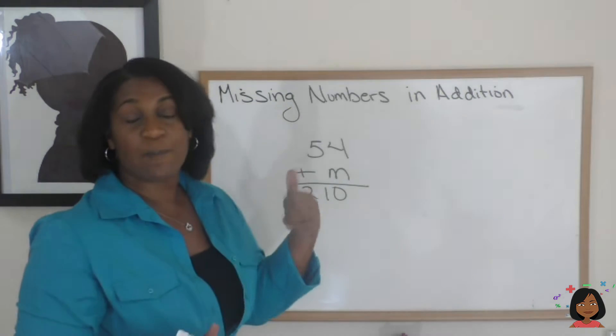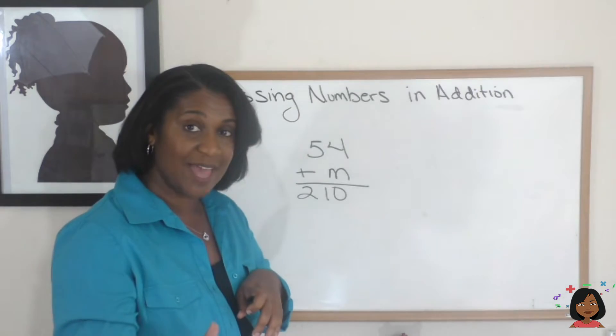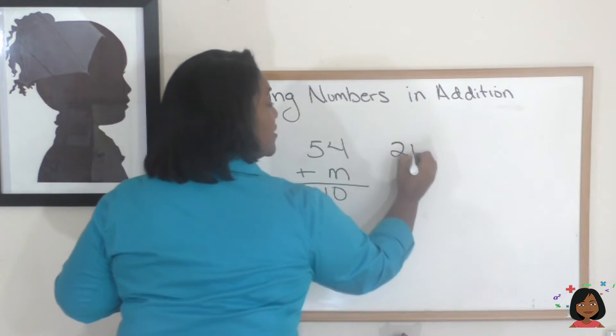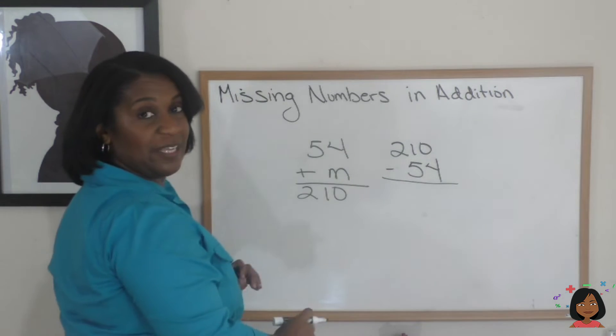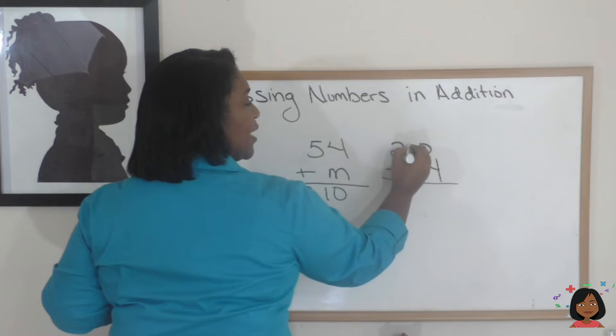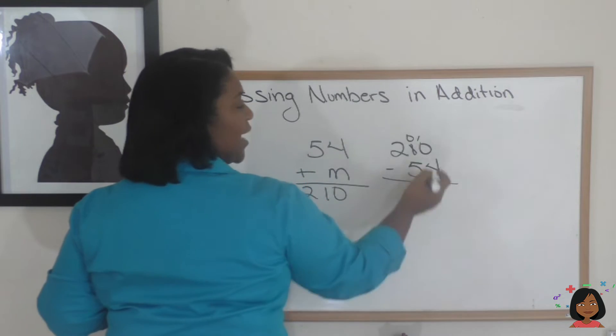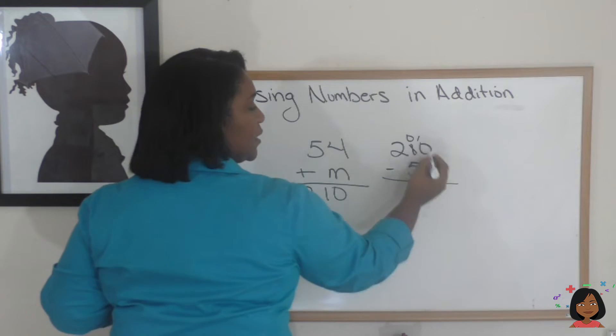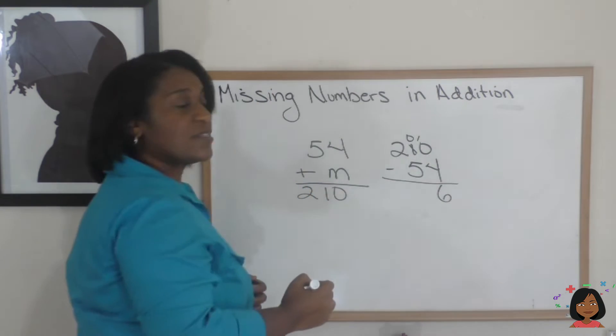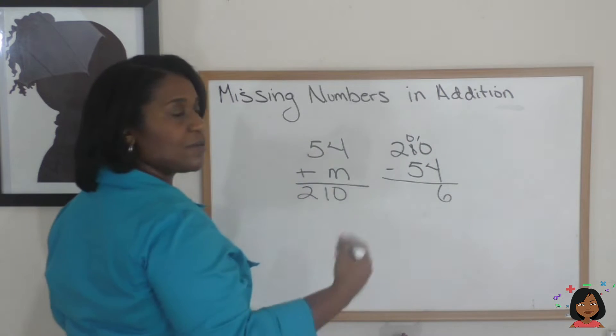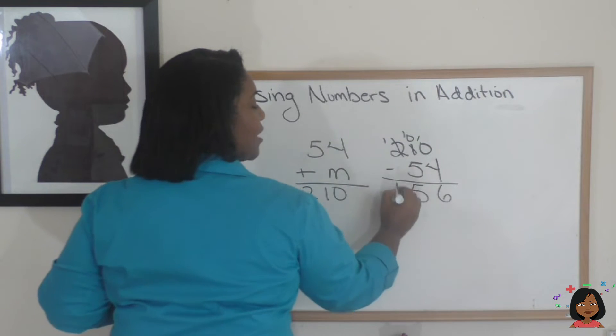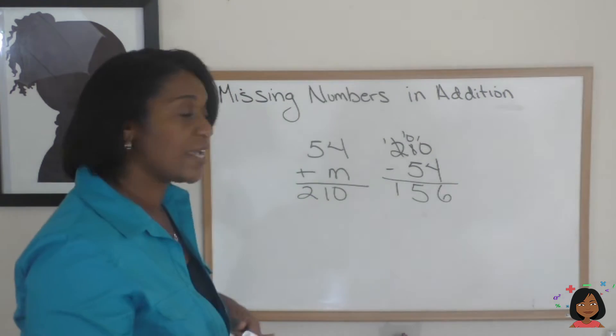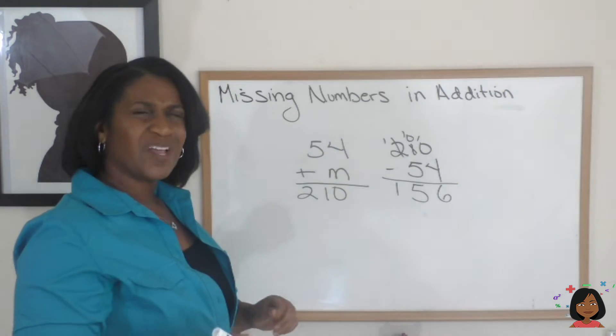And with our other example, we saw that if we subtracted that number out, 210 subtract 54, that it would give us the number that we needed. So, let's do the math. We know we cannot do 4 from 10, so we have to borrow. Now we get 10 minus 4 is 6. We can't take 5 from 0, so we're going to borrow. And that leaves us with 156 is the M.